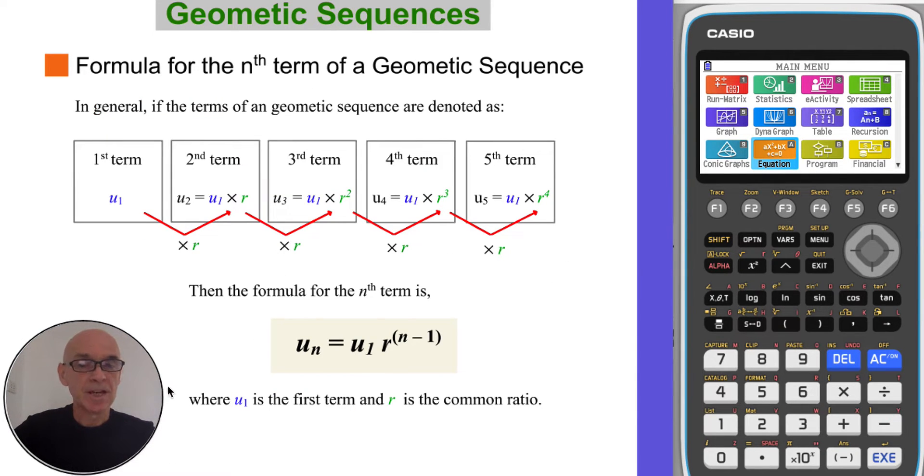The formula for the nth term of a geometric sequence is un equals u1 multiplied by R to the power of n minus 1, where u1 is the first term and R is the common ratio. As I said this formula is given in your formula booklet, and the diagram shown here is to help illustrate the formula.